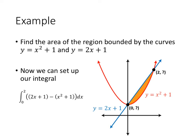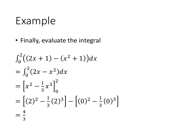So we've got our integral. We're going to start at 0 and end at 2, and from the picture we can see that the line y equals 2x plus 1 is the function that's on top, and the parabola y equals x squared plus 1 is on the bottom.